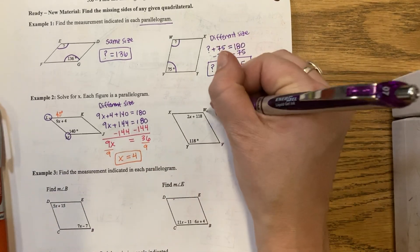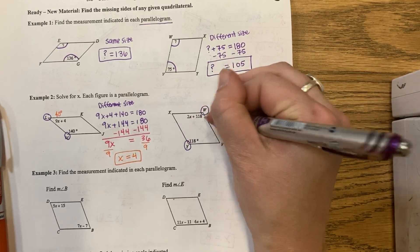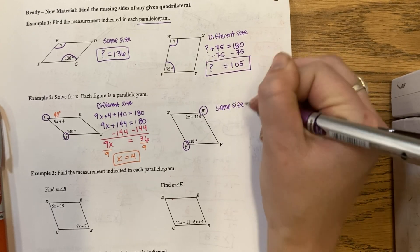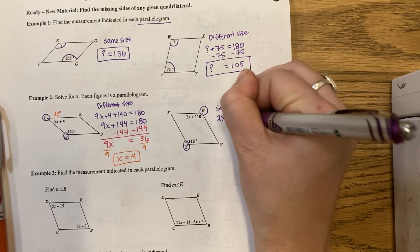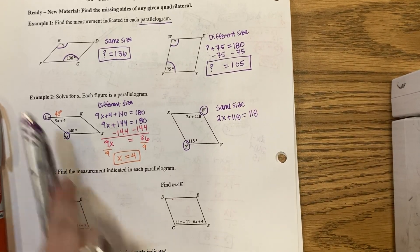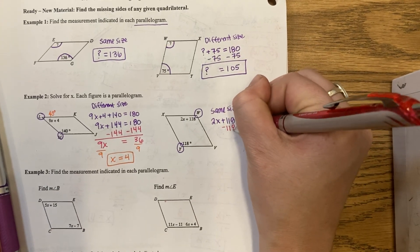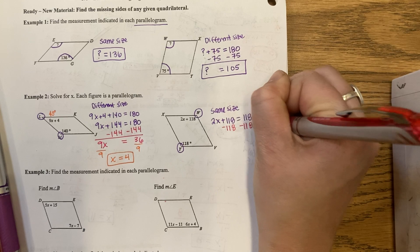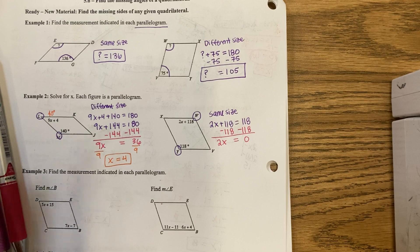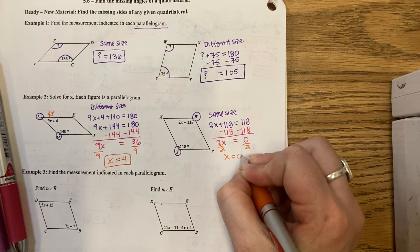I have angle W and angle Y. They are the same size angles. So I'm going to say that 2x plus 118 equals 118. Then I minus 118. 2x equals 0. And when you divide by 2, the 0 is just going to stay a 0.